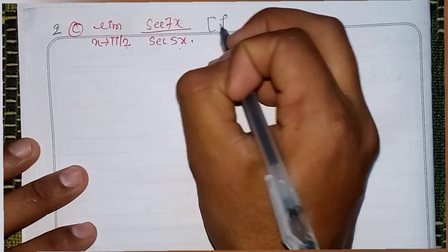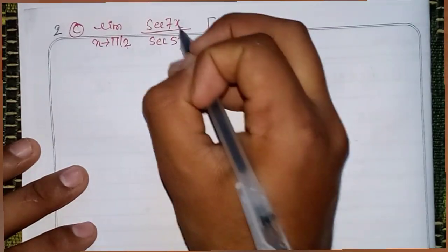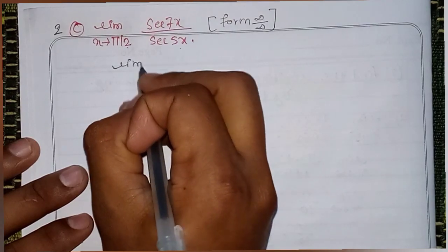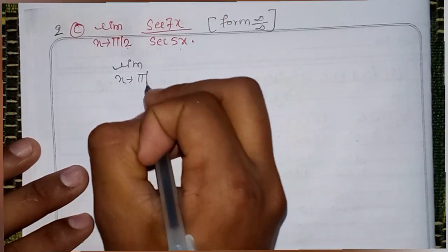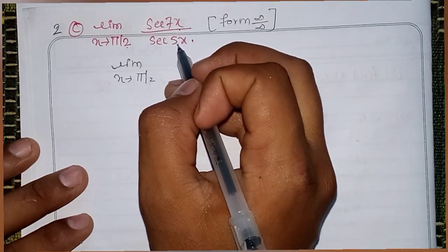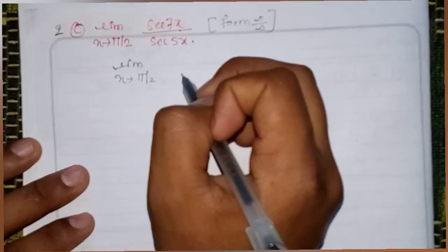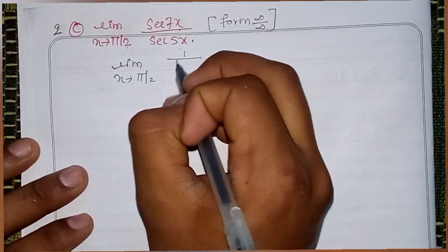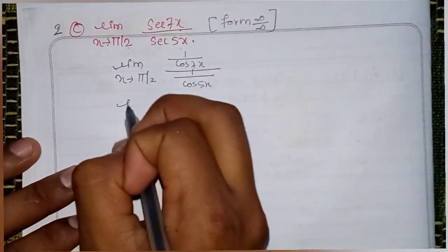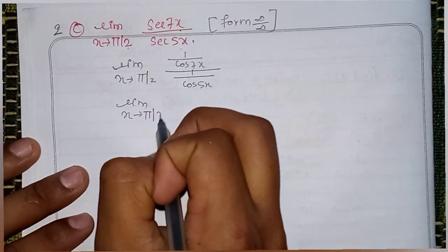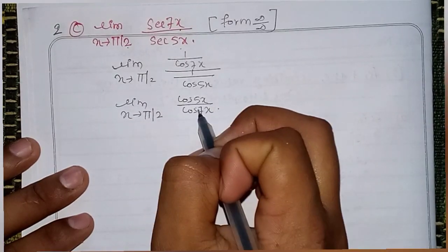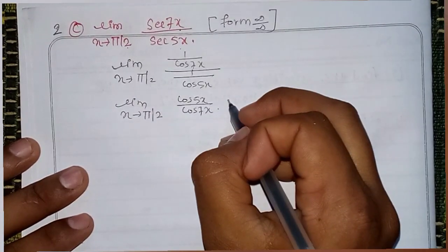Next: 0 by infinity. First check the value — so on the infinity by infinity form. Derivative: the top derivative gives 7x derivative. So 1 by cos 7x divided by 1 by cos 5x. So limit x tends to pi by 2: cos 5x divided by cos 7x.